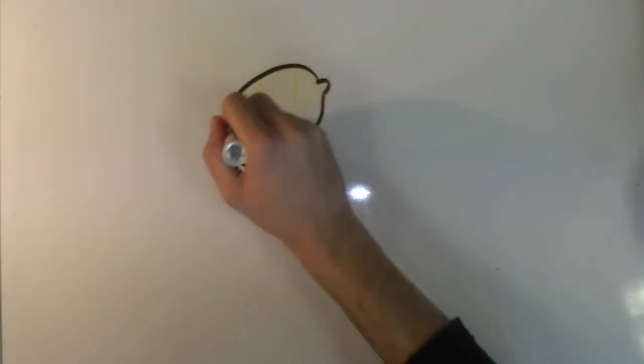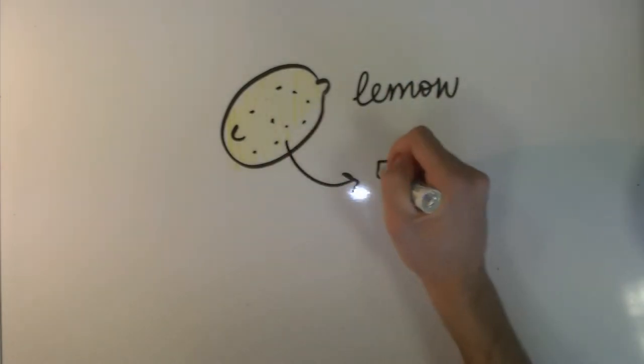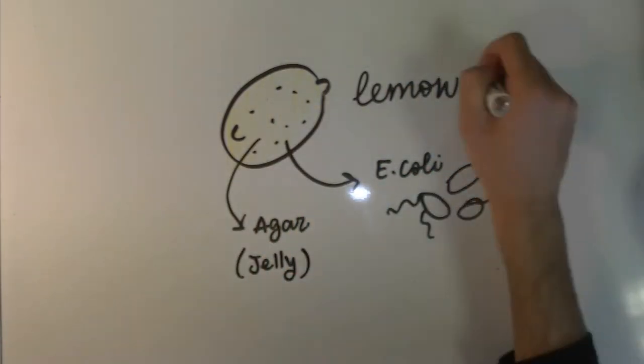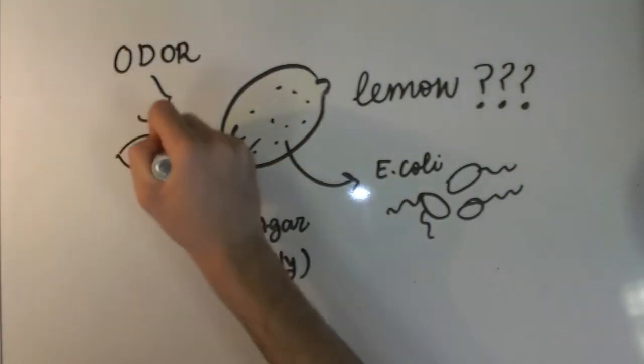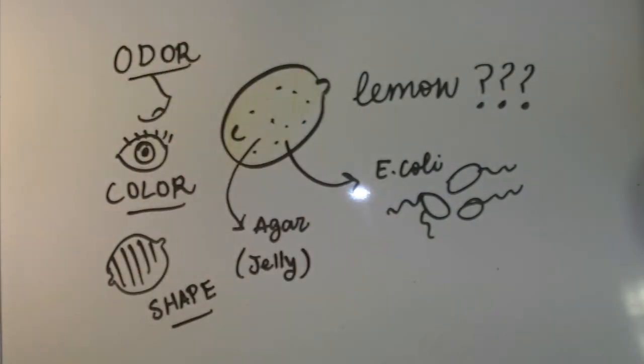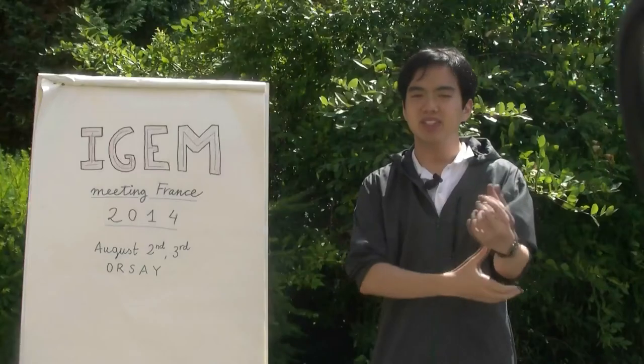What do I mean by this? Basically we're going to use bacteria that will have certain properties similar to a lemon, such as color, smell, and shape, as we will form the shape of a lemon in agar.